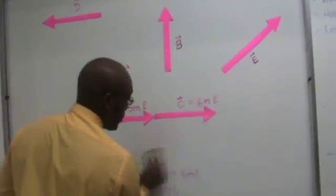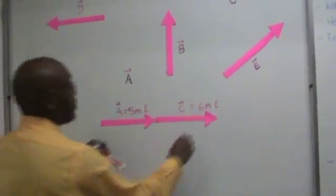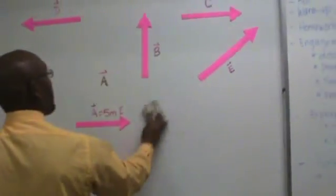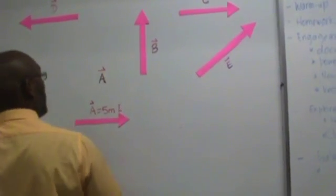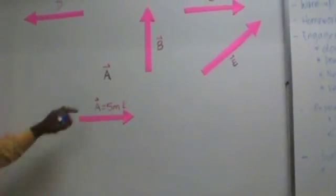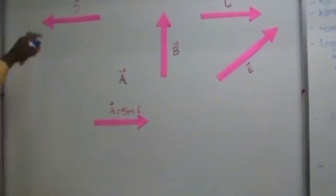Let's look at another example here. Let's keep this here 5 meters east. Now suppose we want to add vector A to vector D.